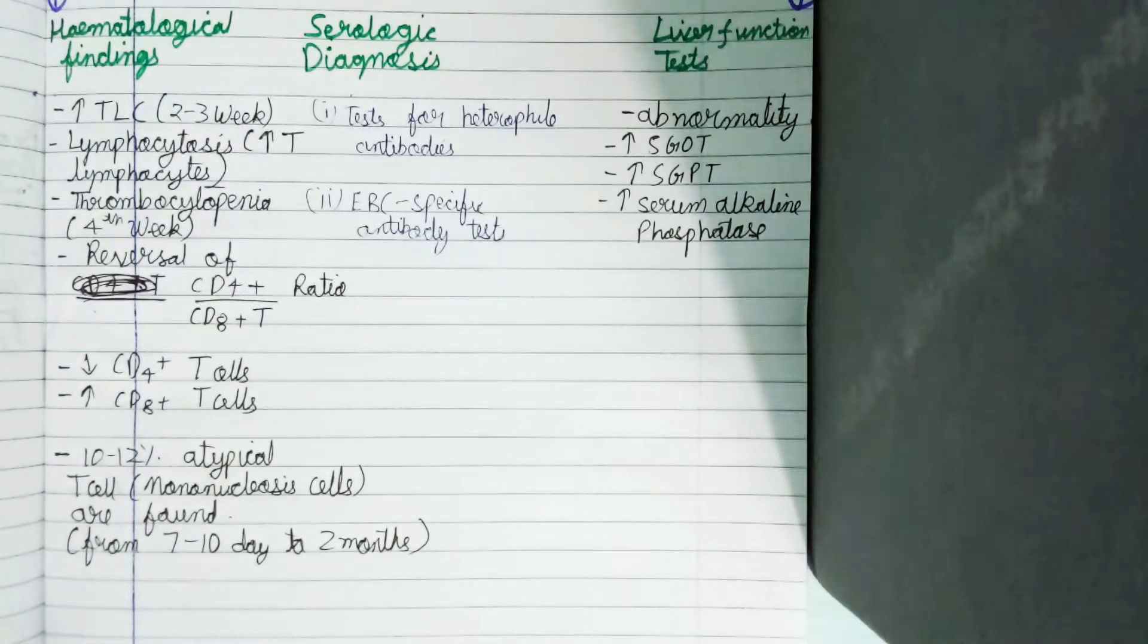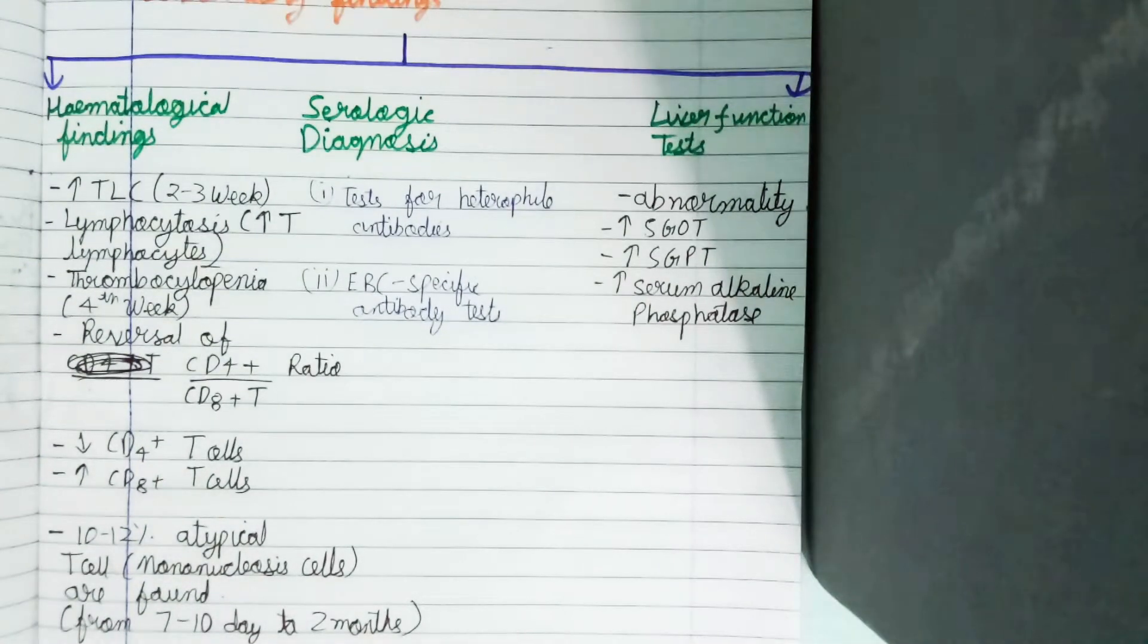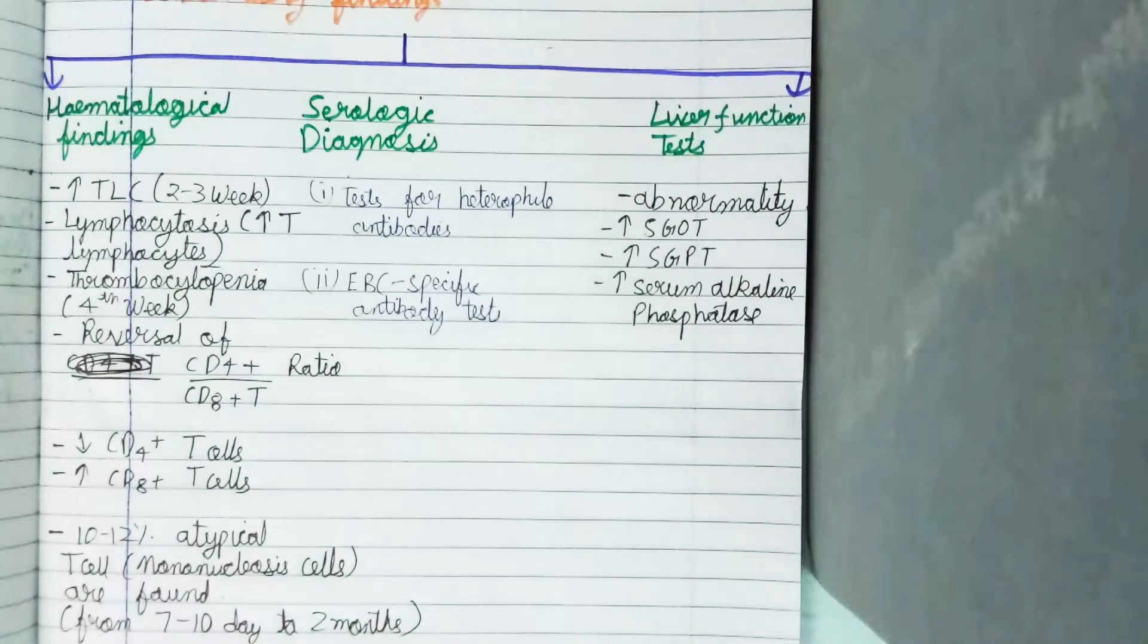For liver function tests, abnormal SGPT and SGOT tests show increases, increase in serum alkaline phosphatase, and a little bit of increase in serum bilirubin is also observed.